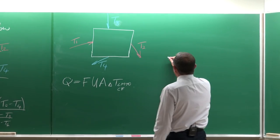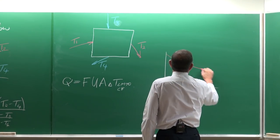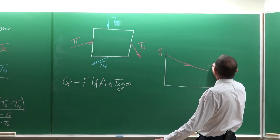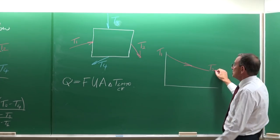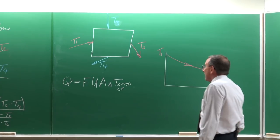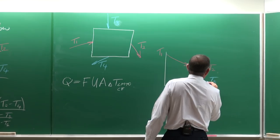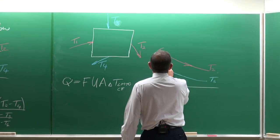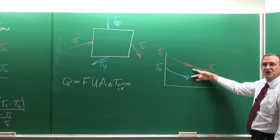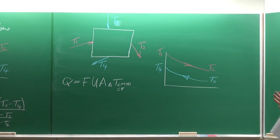Once you've made that decision to treat it as a counter flow heat exchanger, you say schematically that the inlet temperature T1 must be higher than T2 for the hot stream. Then T3 is entering on the cold side and T4 exits on the other end — so you force it to be a counter flow heat exchanger, no matter how complicated the geometry is.